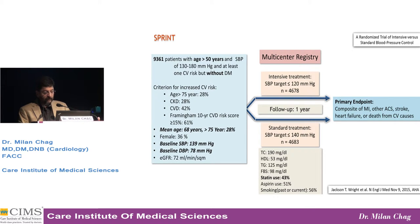The SPRINT trial was conducted and published in NEJM this year. 9,300 patients aged more than 50 were included. Systolic BP was 130 to 180. These patients were non-diabetic and had at least one cardiovascular risk factor. Risk factors were defined as age more than 75, which accounted for 28% in this study.